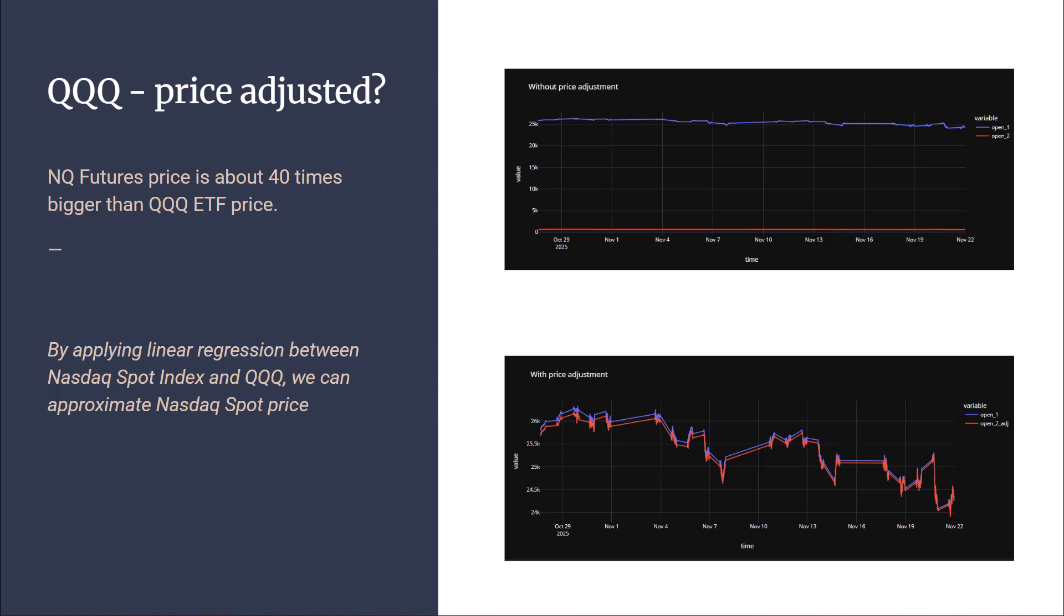Before anyone asks, what does QQQ price adjusted mean? If you look at the NASDAQ futures price, it is around $25,000. And if you look at the QQQ ETF price, it is around $600. When we trade an arbitrage strategy, we want to hedge the prices of equal cash value. What we're doing here is that we have to apply something called a linear regression between the NASDAQ spot index price and the QQQ ETF price. What we'll get is that QQQ is about 40 times smaller than the NASDAQ futures price. If we adjust the QQQ price by about 40 times, we will get a chart that looks something like this. This chart is very meaningful to now compute the basis and the relative value between those two assets.